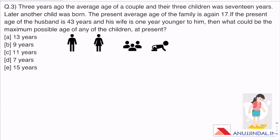Question 3. Three years ago, the average age of a couple and their 3 children was 17 years. Later, another child was born. The present average age of family is 17 again, the same average age. If the present age of husband is 43 years and his wife is 1 year younger to him, then what could be the maximum possible age of any of the children at present?